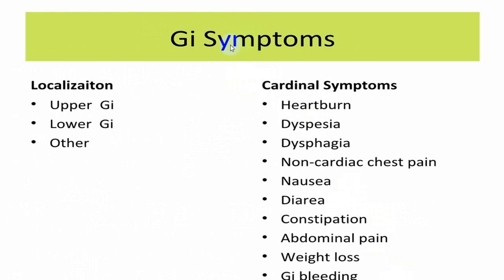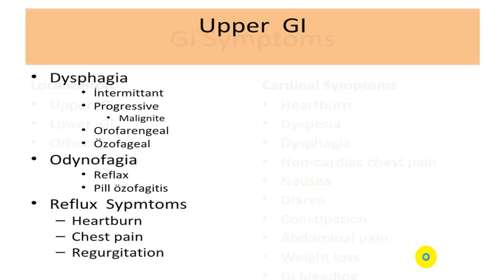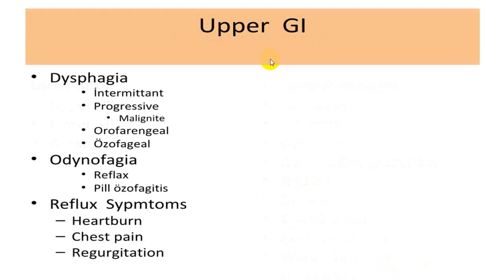You can divide those symptoms into a few groups — upper GI tract, lower GI tract, and others. Some of the cardinal symptoms of upper GI tract include heartburn, dyspepsia, dysphagia, chest burn, and regurgitation.